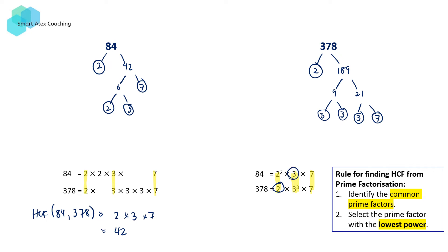And then 7 and 7, they're both the same. So we're going to take 7. So that means that our HCF of 84 and 378 is going to be given by 2 times 3 times 7, which again is equal to 42.